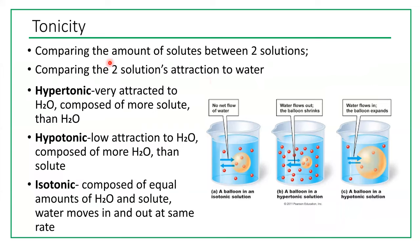Tonicity compares the amount of solutes between two solutions and compares the two solutions' attraction to water. Hypertonic solutions are very attractive to water — they have a lot of salt, for example, so water will move where the salt is. In hypertonic solutions, there is more solute than water. Hypotonic solutions have a low attraction to water and are composed of more water than solute. Isotonic solutions have equal amounts of water and solute.